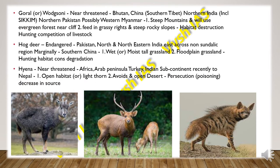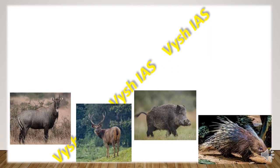Then we have the Hyena, which is near threatened. It is found in Africa, the Arab Peninsula, Turkey and the Indian subcontinent, with recent sightings up to Nepal. They are found in open habitats with light thorn vegetation, and avoid open scrub desert regions. The main threats are persecution through poisoning and a decrease in prey sources — sometimes facing major threat from scarcity of food.